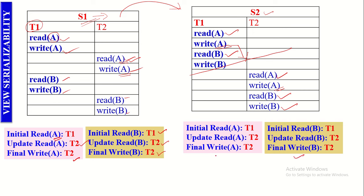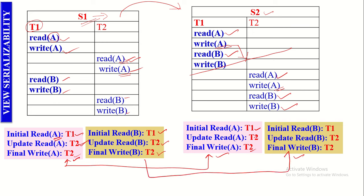Comparing both schedules: on Data Item A, T1 performs Initial Read, T2 performs Update Read, and T2 performs Final Write — the same in both Non-Serial and Serial Schedules. The same applies to Data Item B. Since on each Data Item the same set of transactions performs all three operations in both schedules, we can say that the given Non-Serial Schedule is View Serializable — that is, it is the View Equivalent of its Serial Schedule.